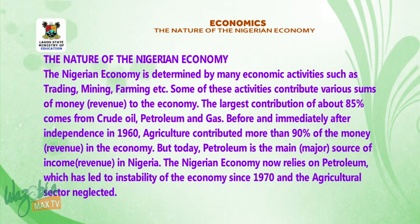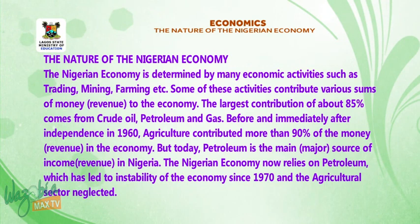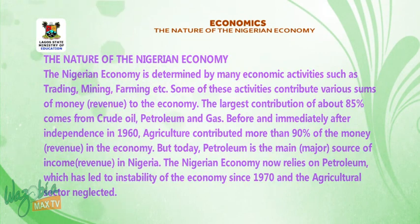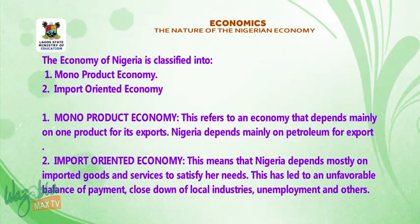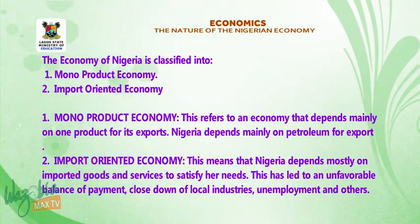The Nigerian economy now relies on petroleum, which has led to instability of the economy since 1970, and the agricultural sector has been neglected. The economy of Nigeria is classified into: 1. Monoproduct economy. 2. Import-oriented economy.